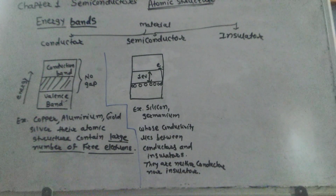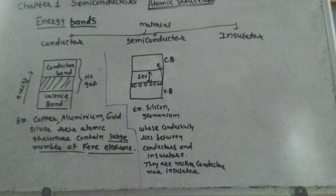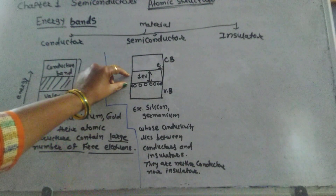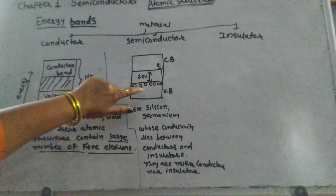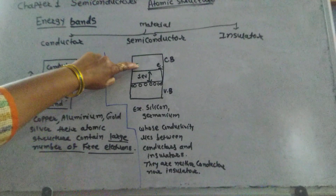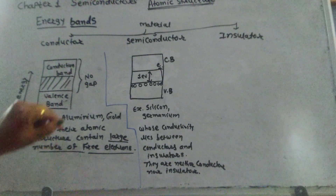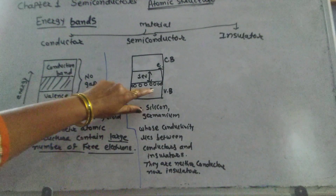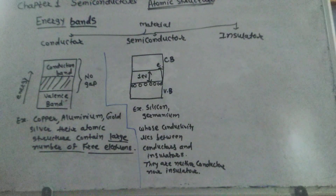A semiconductor behaves like an insulator at 0 degrees, and behaves like a conductor as temperature increases. In a semiconductor, there is a small forbidden energy gap of about 1 electron volt. If this energy is given externally, valence electrons go to the conduction band and become free electrons to provide conduction.